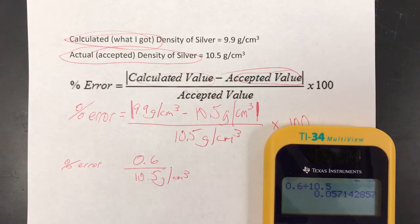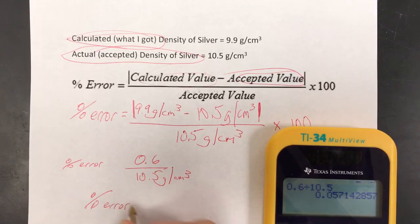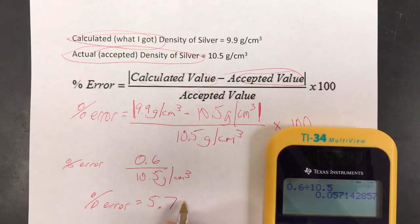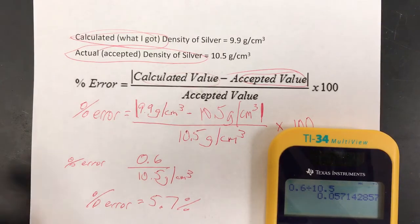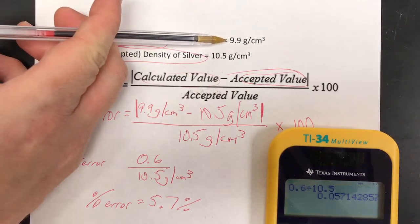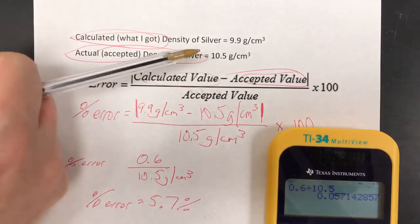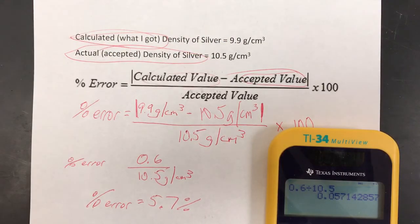Times the whole thing by a hundred, all that means is take the decimal, move it two places to the right and I get percent error equals 5.7 percent. So my value that I calculated, 9.9, is 5.7 percent off from the actual value 10.5. That's how to use the formula.